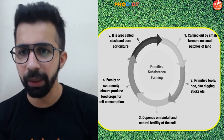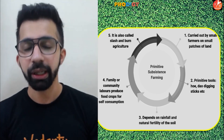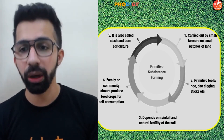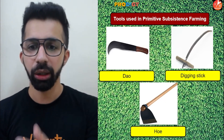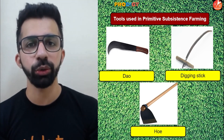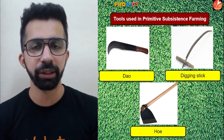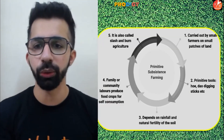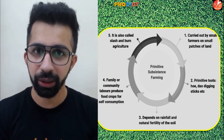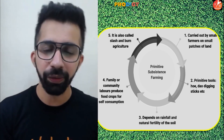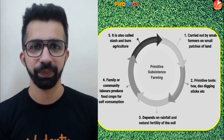Primitive subsistence farming is carried out by small farmers on small patches of land. It is basically followed by tribal communities in India. They use primitive tools like hoe, digging stick, and dao. It is totally dependent upon rainfall and the natural fertility of the soil — no chemical fertilizers, pesticides, or irrigation are used.